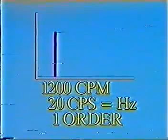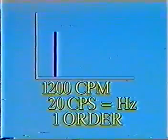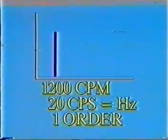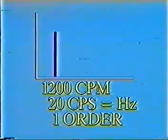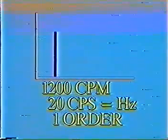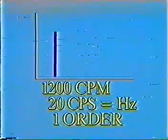The frequency units are displayed in CPM, which is the number of occurrences per minute; Hertz, which is the number of occurrences per second; and orders, which is directly related to the turning speed of the shaft at the measurement point. There are times when one of these units may be more helpful than the others in looking for a particular fault. Other times, another unit may be more helpful. Use them to maximize your analysis capabilities.